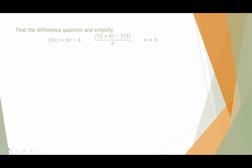In our first example, we have f(x) which is defined by 6x minus 1. And we want to look at the difference quotient of f(3+h) minus f(3) over h. And of course, h cannot be 0 because that would not provide a real number. So what we're going to do is we're going to separate this.